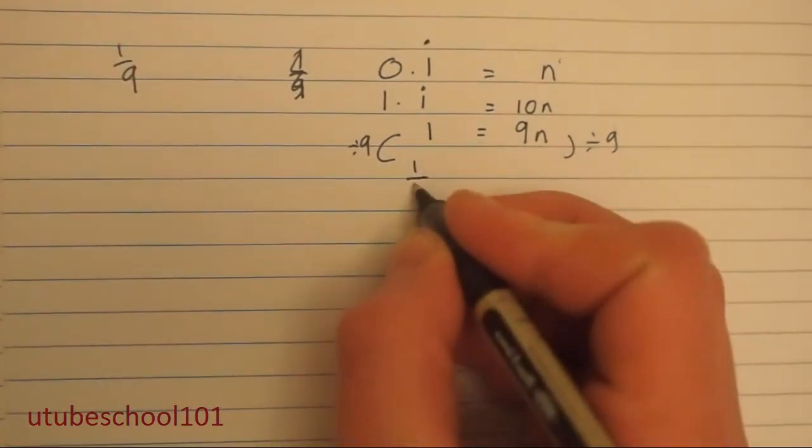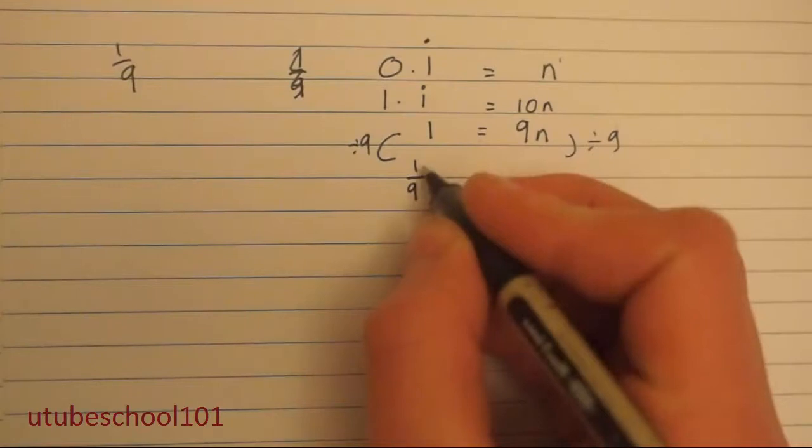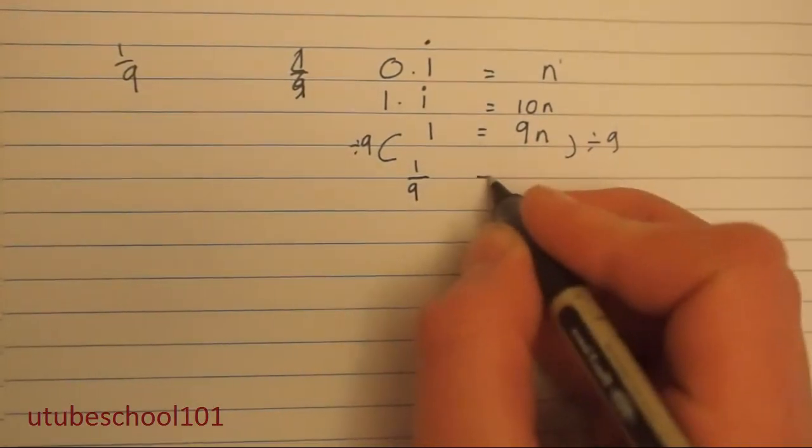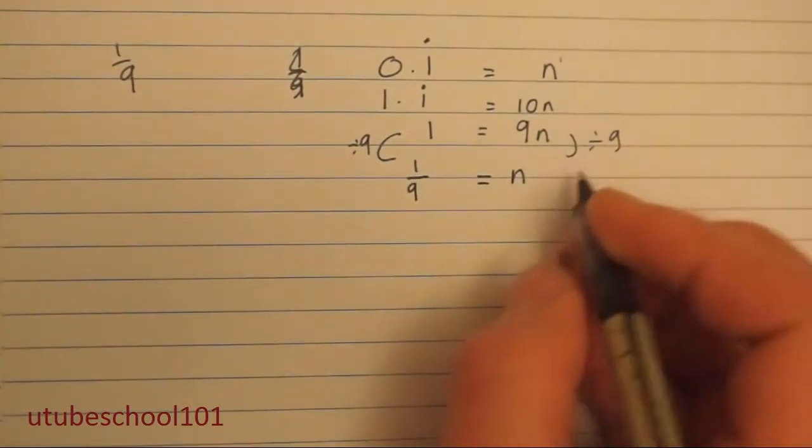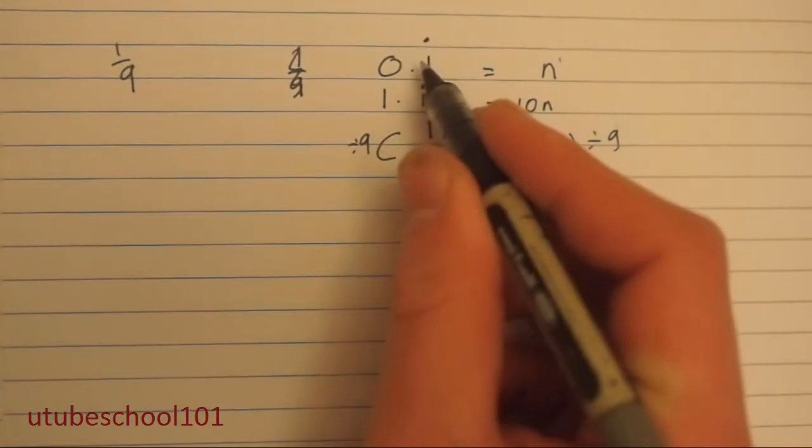So 1 divided by 9 is also the same as 1 over 9, which is going to equal n, and n is our original value 0.1 recurring.